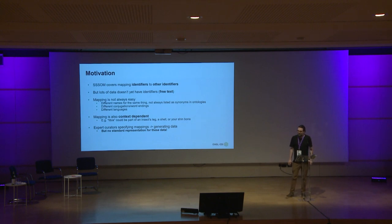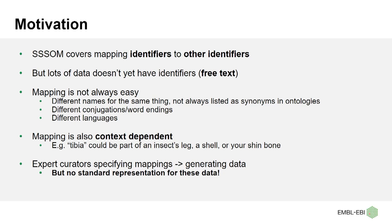The motivation for looking into this is that SSSOM, as it stands, formalizes mappings from identifiers to other identifiers, and is doing amazing work there because that's something that has never been formally specified — apart from in ontologies where you get these little mapping cross-references that don't mean a huge amount. SSSOM gives you the vocabulary to talk about mappings, the file formats, and the tooling. But mappings from identifiers to other identifiers are one problem, and mappings from free text to identifiers is a very different problem indeed.